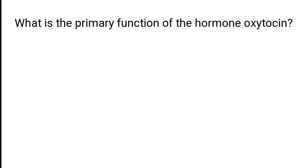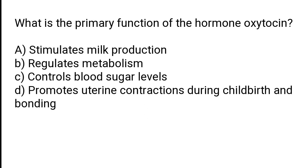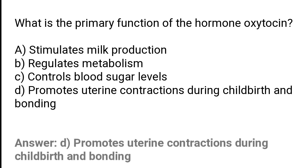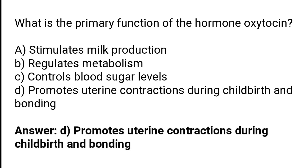What is the primary function of the hormone oxytocin? Stimulates milk production, regulates metabolism, controls blood sugar levels, or promotes uterine contractions during childbirth and bonding. The correct answer is option D: oxytocin promotes uterine contractions during childbirth and bonding.